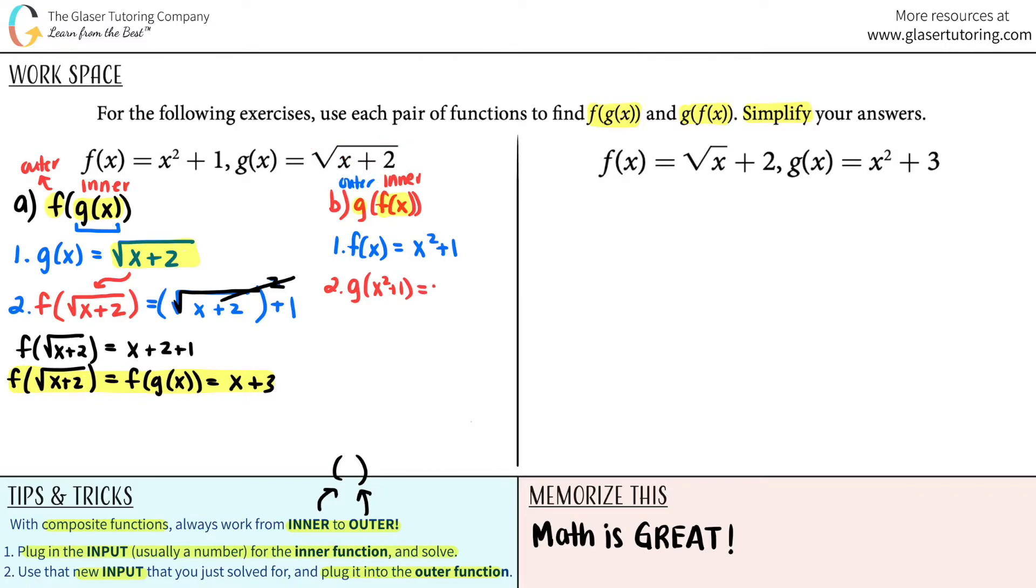So it would be the square root of x squared plus one plus two. And then clean it up. G of x squared plus one, which is the same thing as g of f of x. We're getting the final answer. This all equals the square root of x squared plus three. And that is our final answer for the second part.